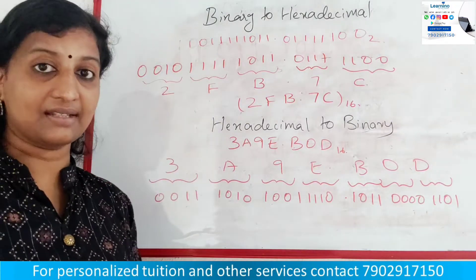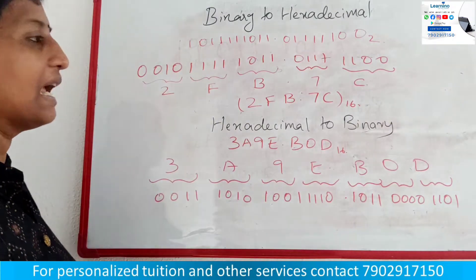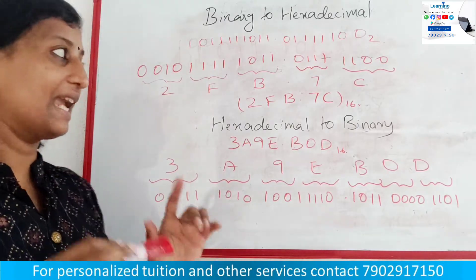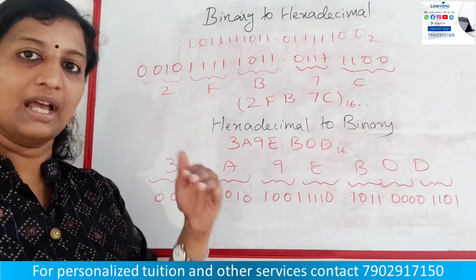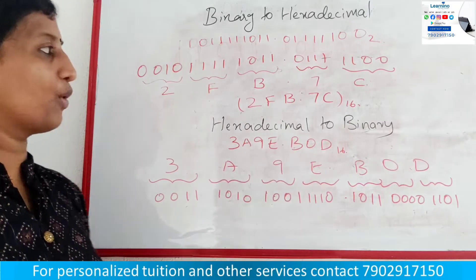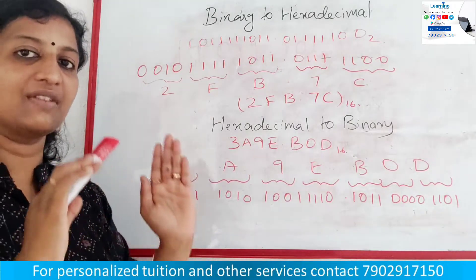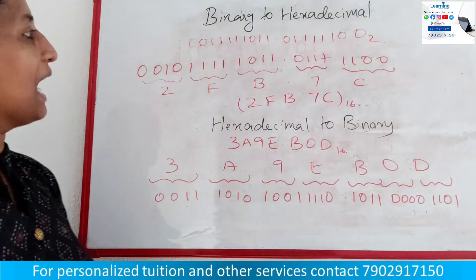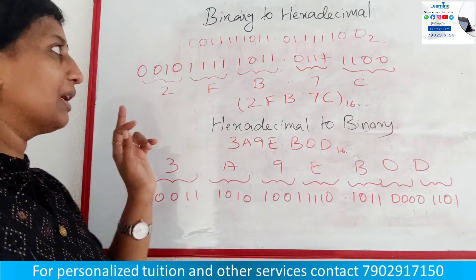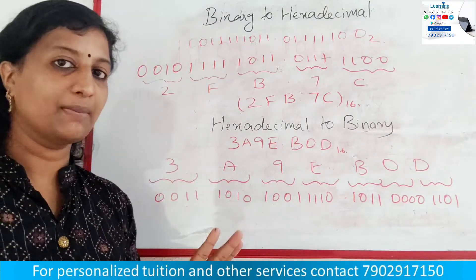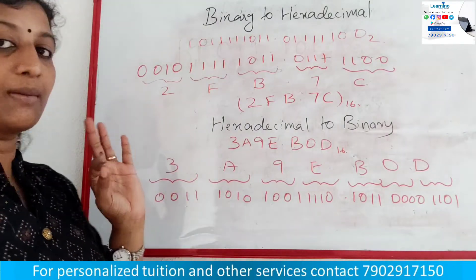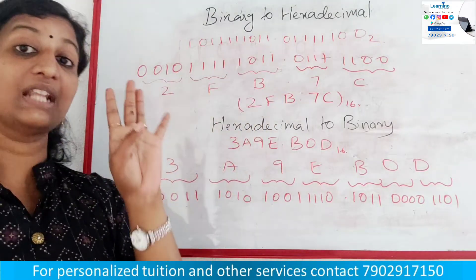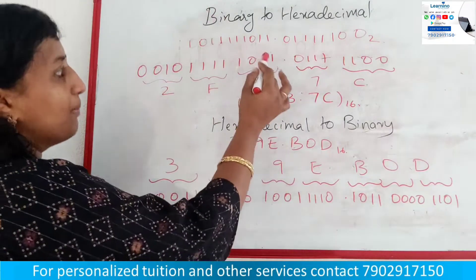To convert to hexadecimal, we group the binary digits. This time, we are grouping into 4 bits each. We have 4 bits per group.